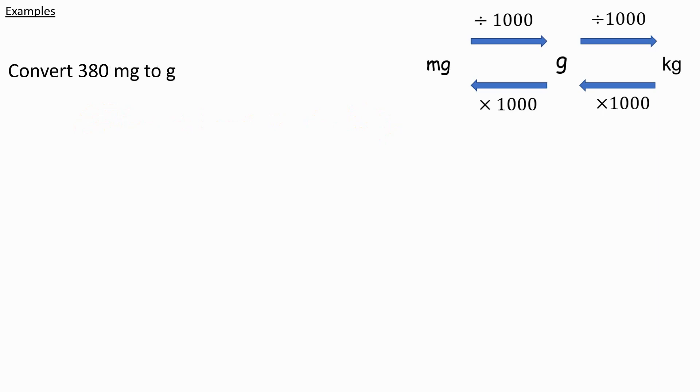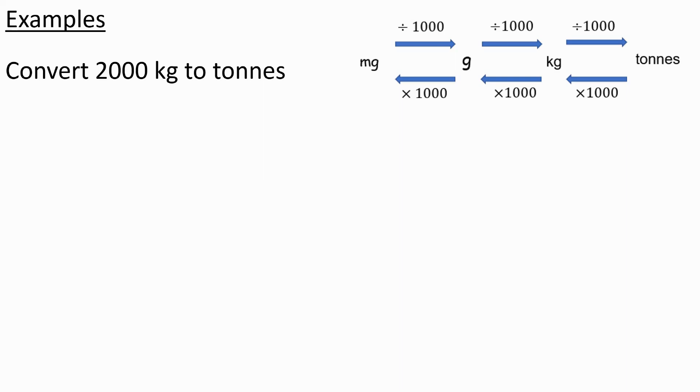380 milligrams to grams, that's going to be 0.38 grams, and so on. If we wanted to change it to tons from kilograms, you would just need to divide by a thousand again. So 2,000 kilograms, divide that by a thousand, and you end up with 2 tons. So 2,000 kilograms is 2 metric tons.